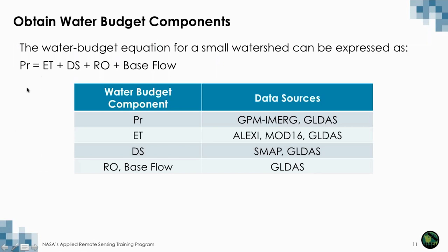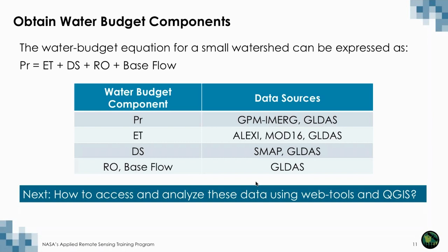To obtain water budget components, you can use a number of data sources. Precipitation can be from GPM iMerge in near real time. Evapotranspiration — we saw LXE, MOD16, also METRIC, which is high-resolution ET, but GLDAS also provides ET. Storage, or change in surface water storage, is soil moisture — SMAP and GLDAS both provide this. And runoff is not directly observable from satellite, but GLDAS can provide that. Next, we are going to go through how to access and analyze this data using web tools and QGIS.